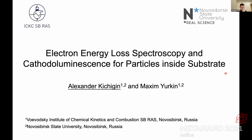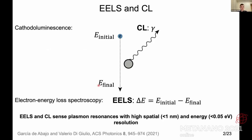The work is called electron energy loss spectroscopy (EELS) and cathodoluminescence (CL) for particles inside a substrate. EELS and CL are experimental techniques performed in an electron microscope. When you put a nanoparticle in an electron microscope and shoot relativistic electrons at it, the electrons lose energy. Measuring their final and initial energy gives the energy loss — hence electron energy loss spectroscopy. The particle also gets excited and emits light, which is collected and measured — that's cathodoluminescence.